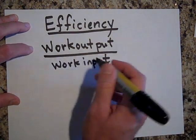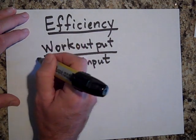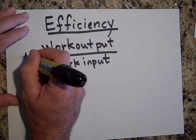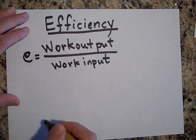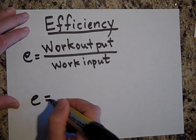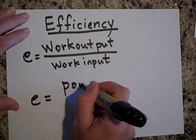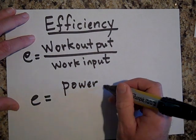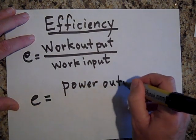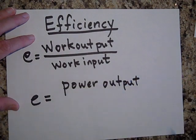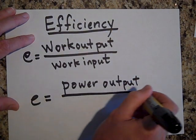If we want percent efficiency, then we multiply by 100. It's also, so that's one way of saying efficiency, is that we give it a lowercase e, but efficiency is also power output divided by the power input.